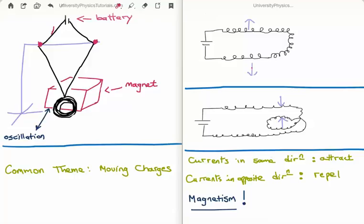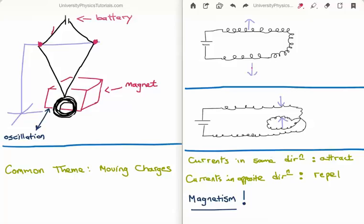Let's discuss two more experiments you can perform at home. The first one is on the top right of your screen. Here we have a battery connected from either terminal through a wire. If you turn on your switch in this case, what you'll find is that your two straight segments of wire will repel. The current will be going to the right on the top segment of wire but to the left on the bottom segment of wire. So it seems that currents moving in the opposite direction are causing the wires to repel.